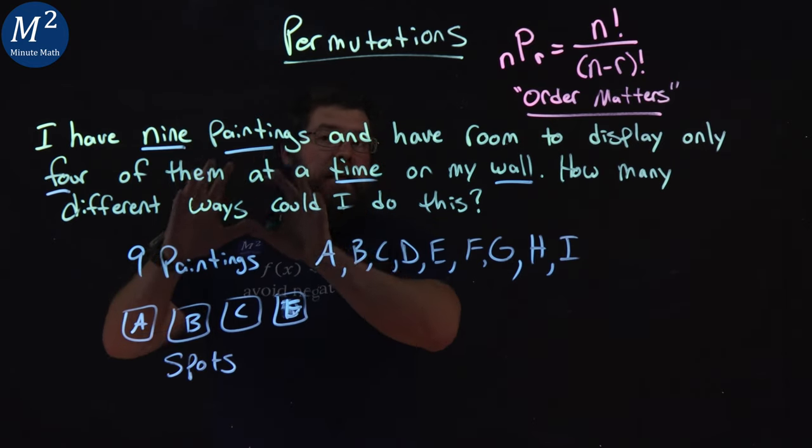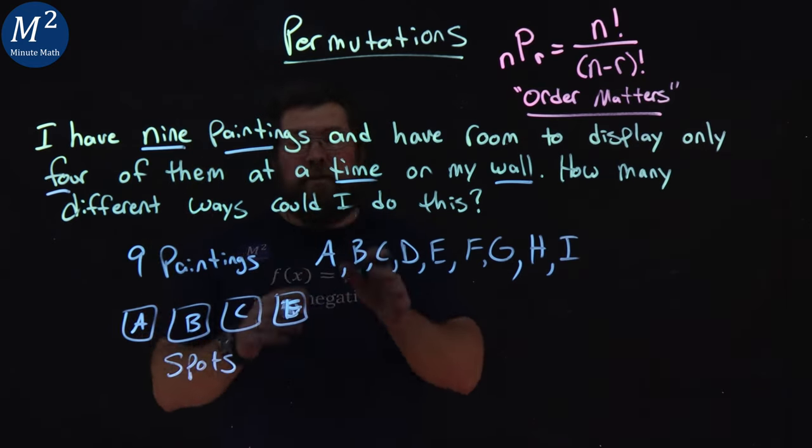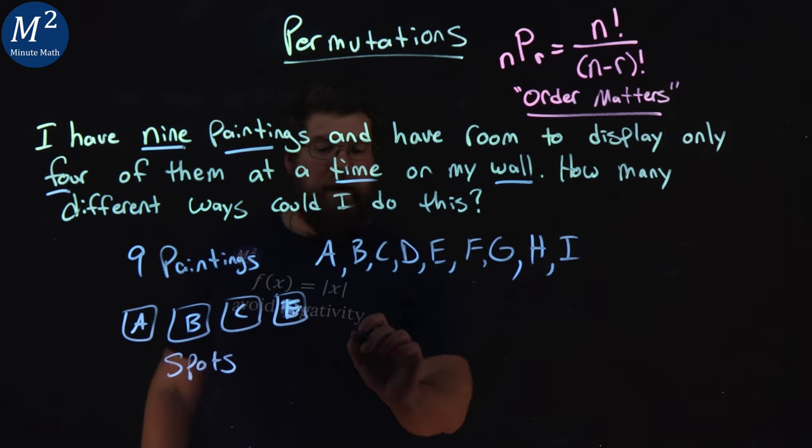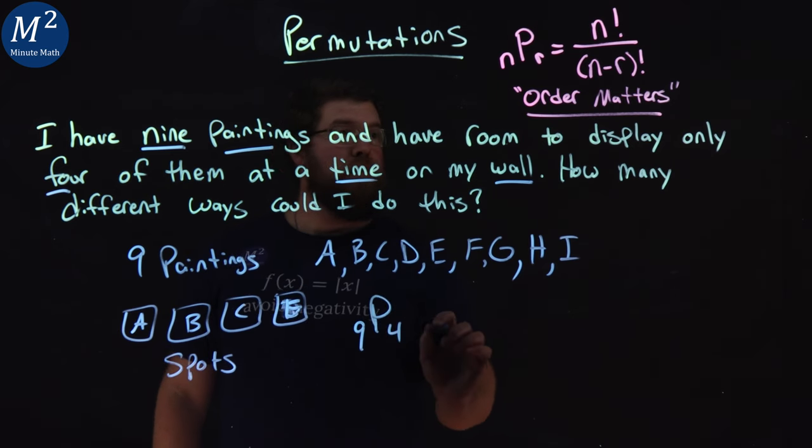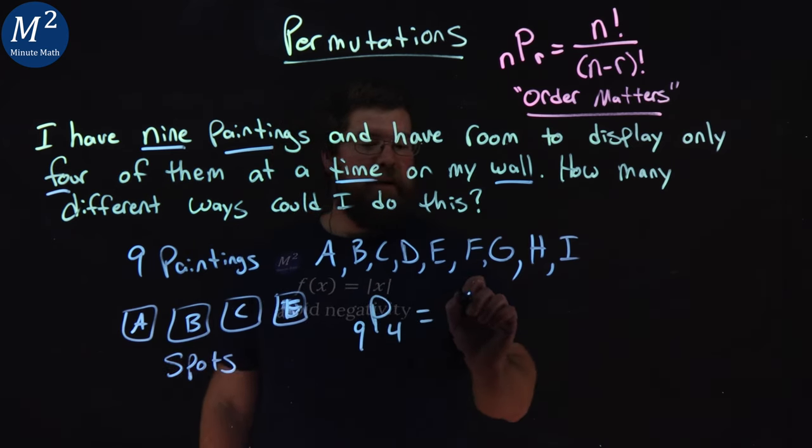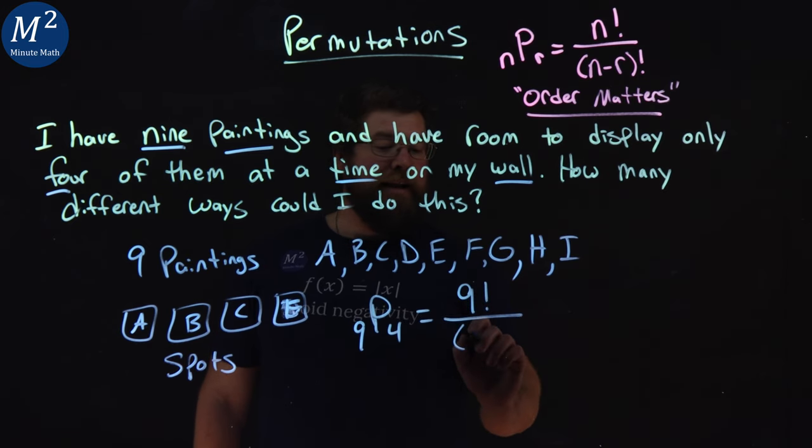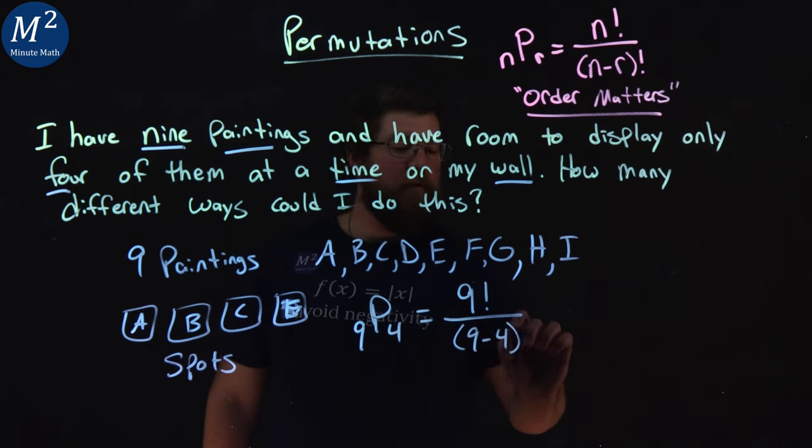N being, in this case, the number of paintings we have, the number of options that need to fit into these four spots. So we would have 9P4, in this case. That would be 9 factorial over 9 minus 4 factorial.